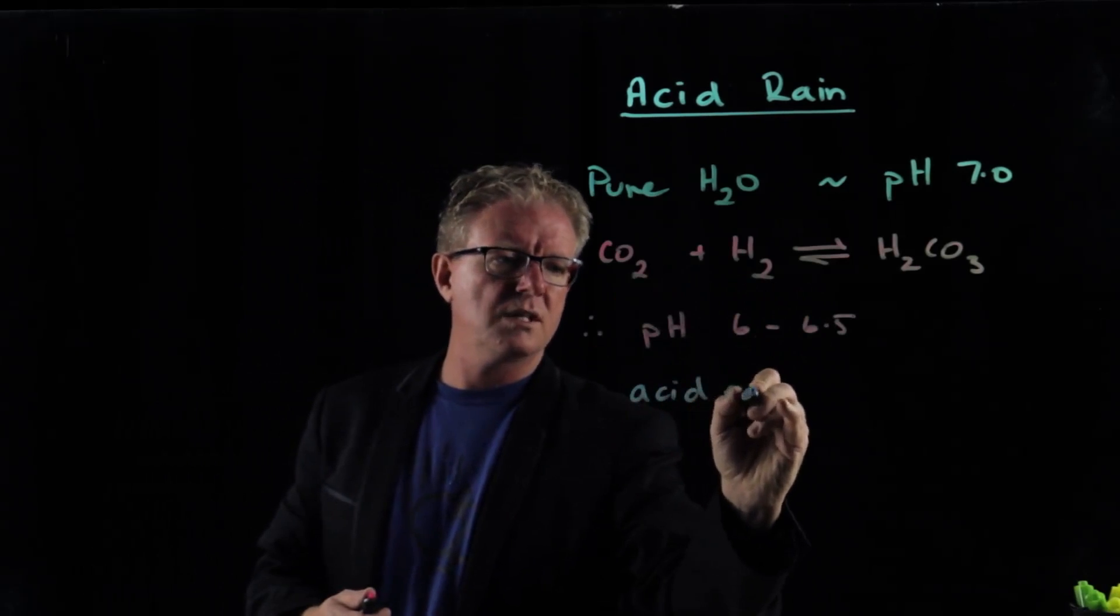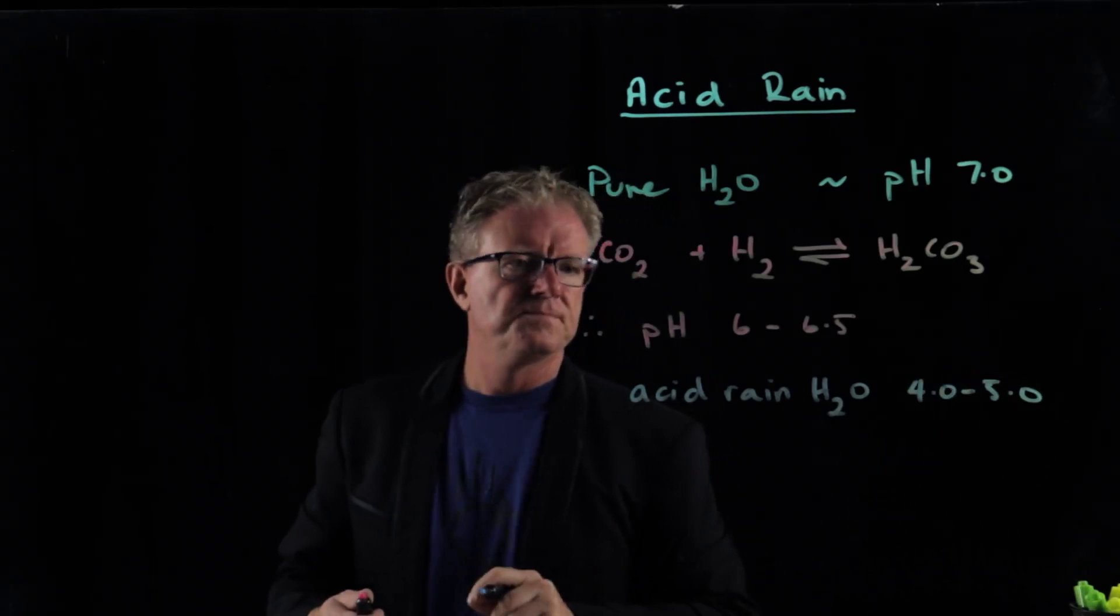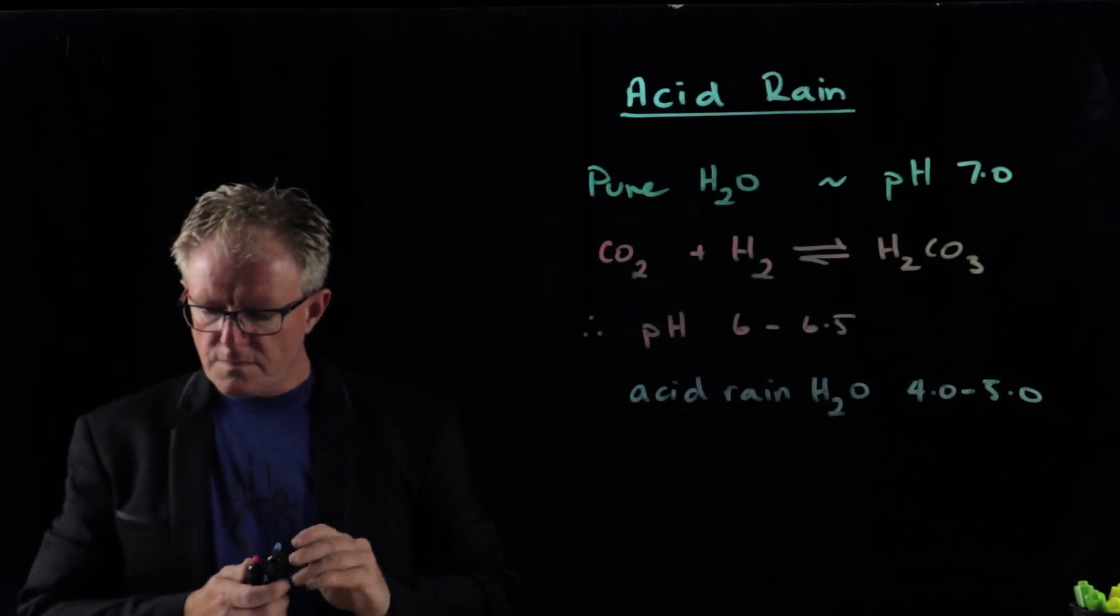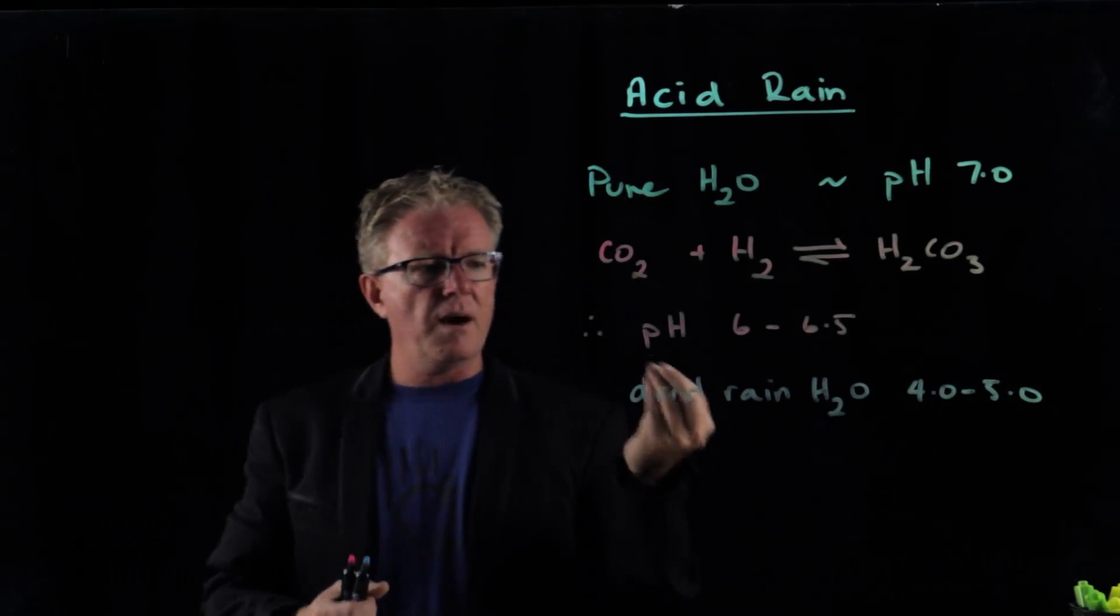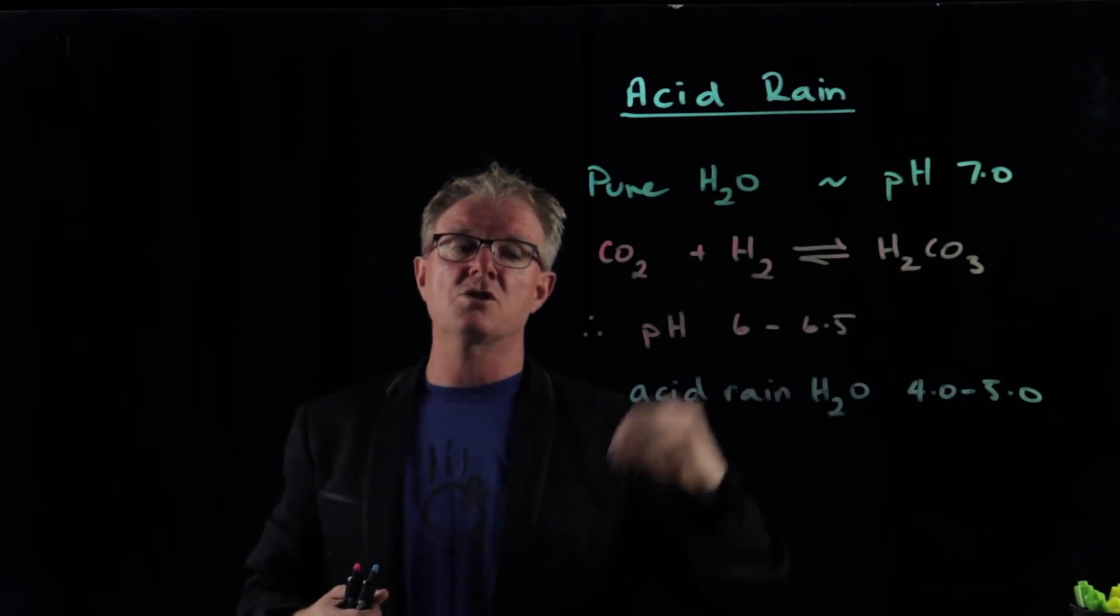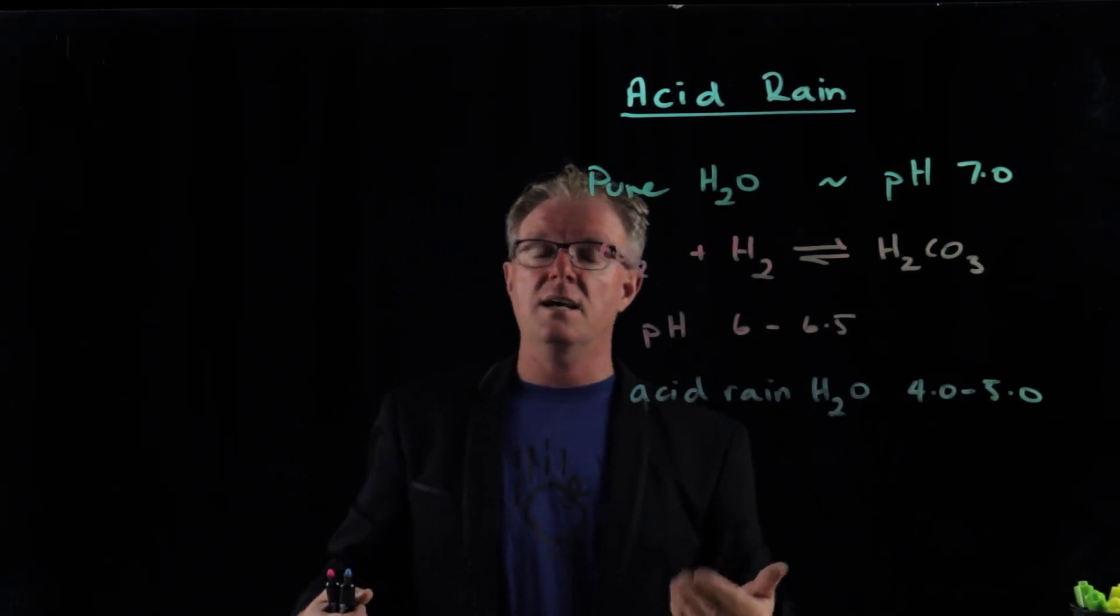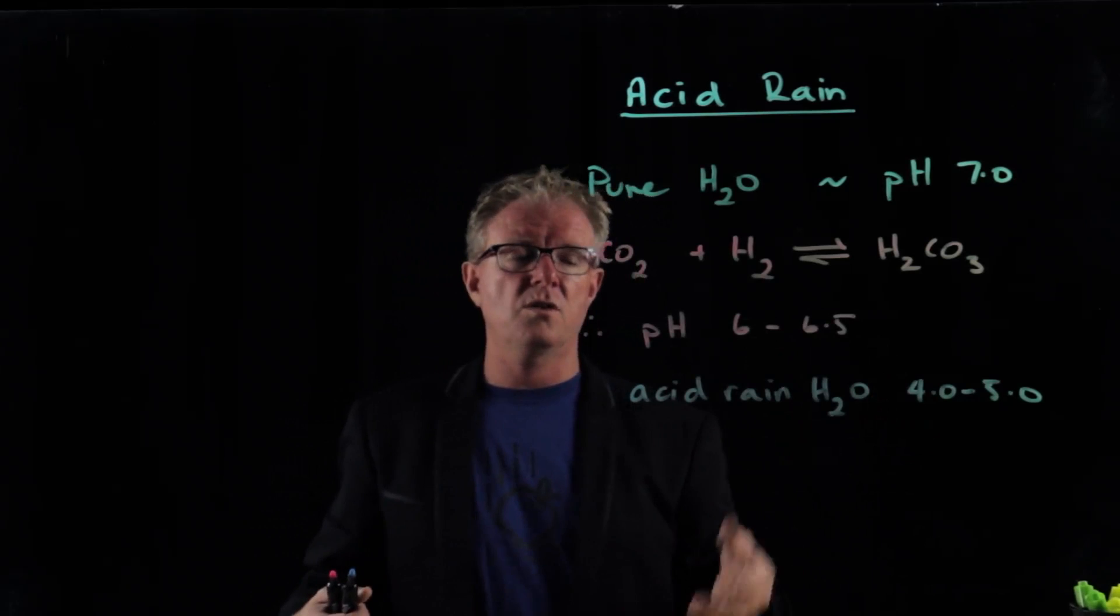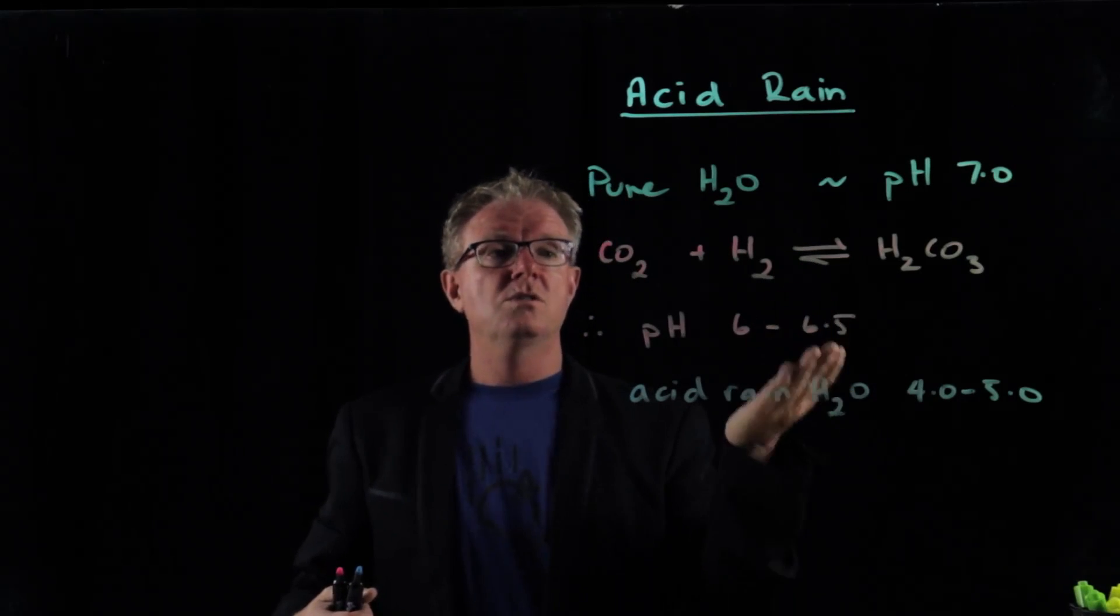But we can also find our other gases, sulfur dioxide and nitrogen dioxide, will do the same thing. They will dissolve in water and they will make sulfuric acid and nitric acid as well. So all three of these non-metallic oxides will dissolve into the water and cause acid rain.